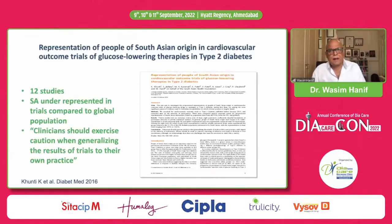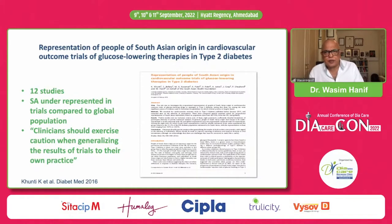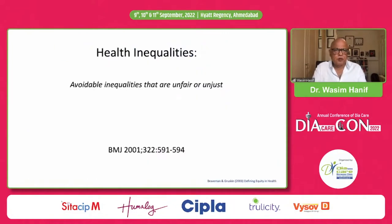This is a review paper that we did a few years ago with my good friend Professor Kunti. What we basically looked at is 12 studies which really shaped the ADA/SD guidelines in terms of the cardiovascular outcomes with glucose-lowering therapies and type 2 diabetes. What we found was, if you look at the South Asian population where most of these medications will be used, they were underrepresented in trials compared to the global population. These trials did not have representative South Asian populations. We concluded that clinicians should exercise caution when generalizing the results of trials to their own practice.